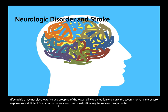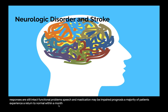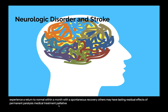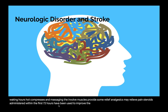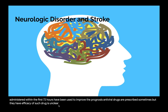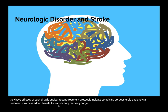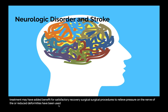A majority of patients experience a return to normal within a month with spontaneous recovery; others may have lasting residual effects or permanent paralysis. Medical treatment is palliative: eye protection such as an eye patch during sleep, eye lubrication drops during waking hours, and hot compresses and massaging the involved muscles provide some relief. Corticosteroids administered within the first 72 hours have been used to improve the prognosis. Antiviral drugs are sometimes prescribed, though their efficacy is unclear. Recent treatment protocols indicate that combining corticosteroid and antiviral treatment may have added benefit for satisfactory recovery. Surgical procedures to relieve pressure on the nerve have been used but are controversial and seldom recommended.